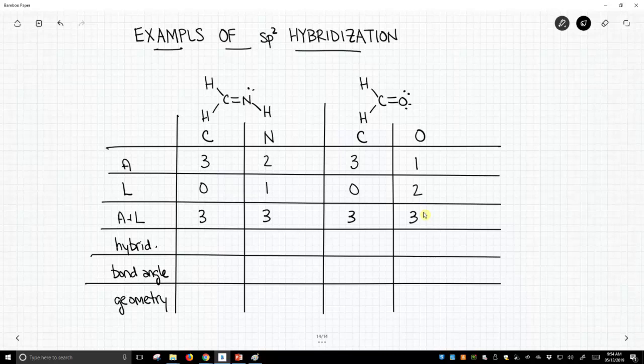Again, the hybridization is normally determined by the number of attached atoms plus lone pairs. Not always, but generally. So these all have three as A plus L, so they need three hybrids. And the hybridization scheme that gives us three hybrids is sp² hybridization.